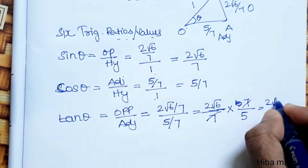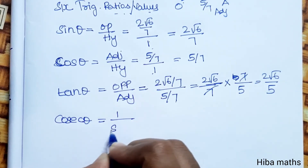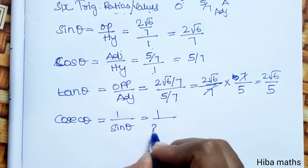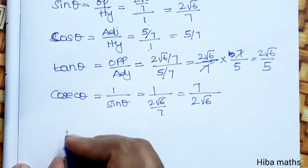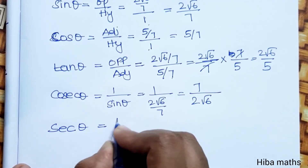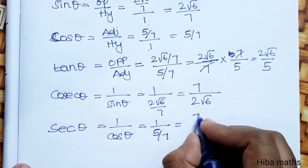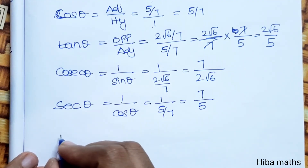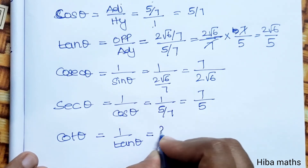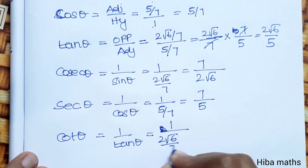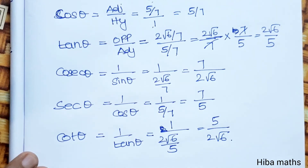csc θ = 1/sin θ = 1/(2√6/7) = 7/(2√6). sec θ = 1/cos θ = 1/(5/7) = 7/5. cot θ = 1/tan θ = 1/(2√6/5) = 5/(2√6).